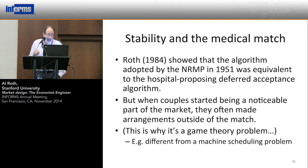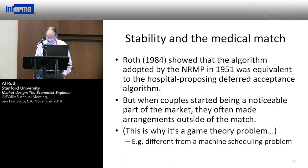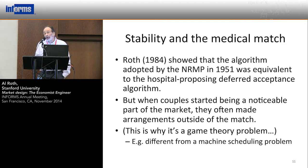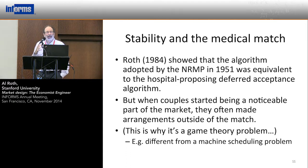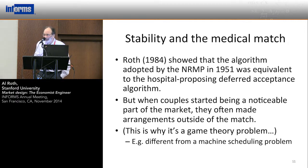When couples started to be a noticeable part of the medical labor force in the 1970s, they often were not found where they had been matched — even if they entered the match and were matched, when you looked in July to see where they were, they weren't there. That meant they were forming blocking pairs — getting on the phone and finding jobs they preferred and going to those jobs. Those jobs were therefore not hiring the people they were supposed to hire. This is why it's a game theory problem: you can tell them where to go, but you can't make them go there.